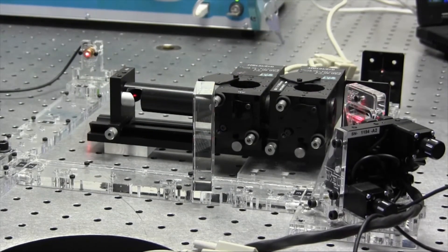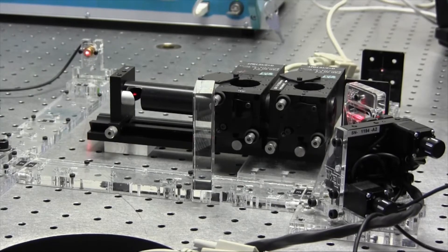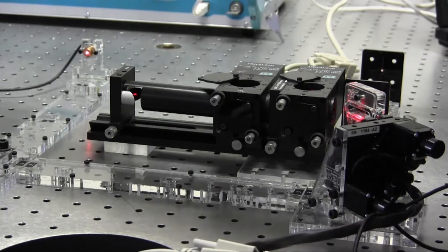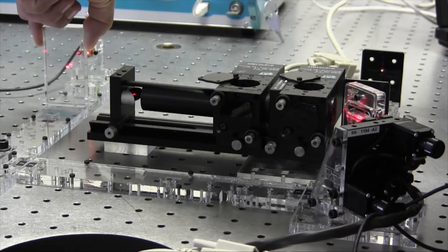For example, here you can see the stepper motor realign itself as a new optical device is introduced into the system. Even as the new optic moves and changes the beam direction, the Alina compensates to keep a strong, consistent beam.